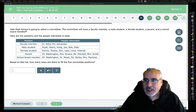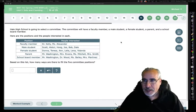Let's see, we've got a high school is going to select a committee member or a committee. Committee will have a faculty member, male student, a female student, a parent, and a school board member. One of each.